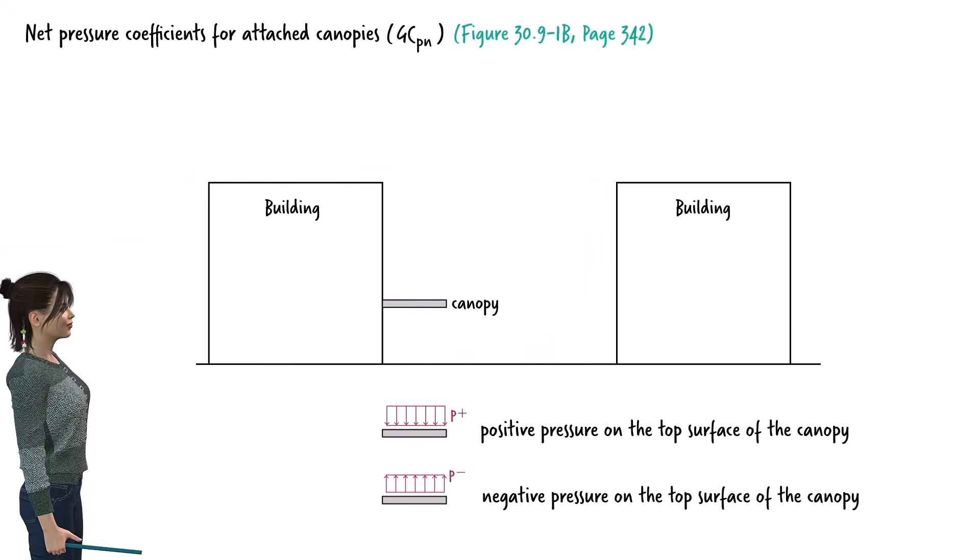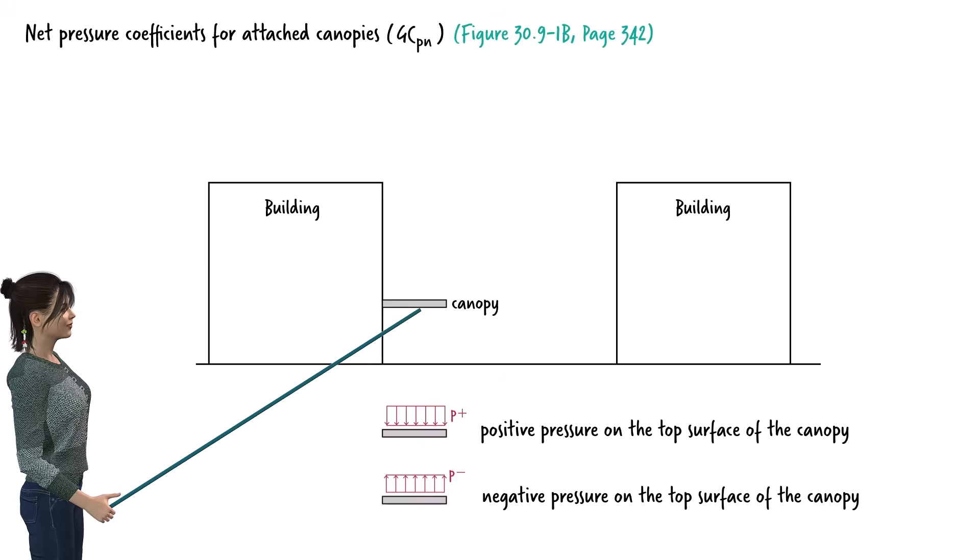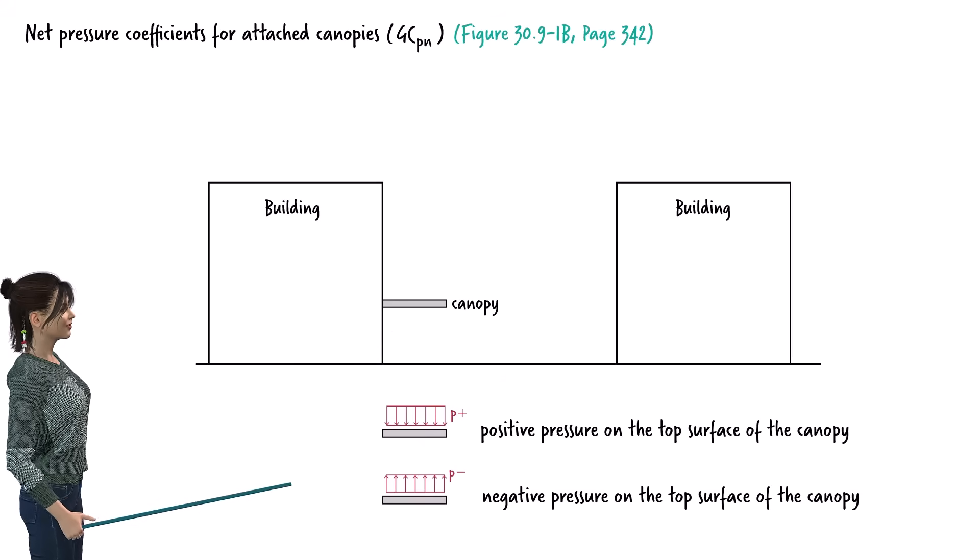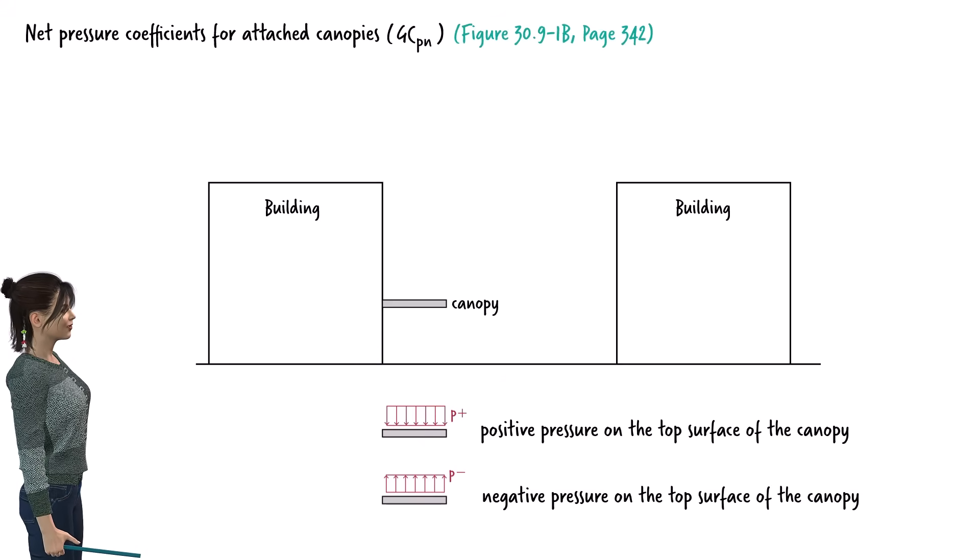Wind can also create positive and negative pressures on the canopy's bottom surface. The ASCE provisions provide a set of coefficients to account for both positive and negative pressures when designing various components of canopies. For designing the structural skeleton of a canopy, ASCE recommends using the net effect of positive and negative pressures.